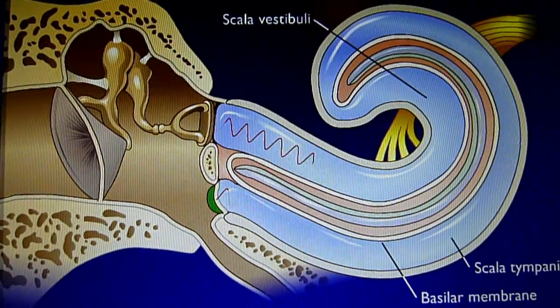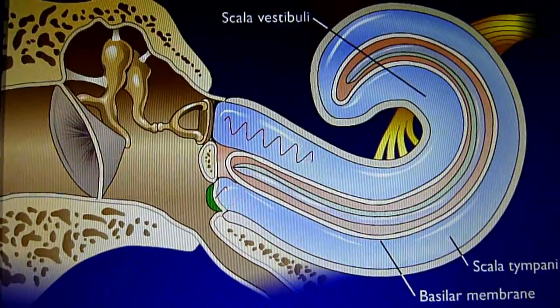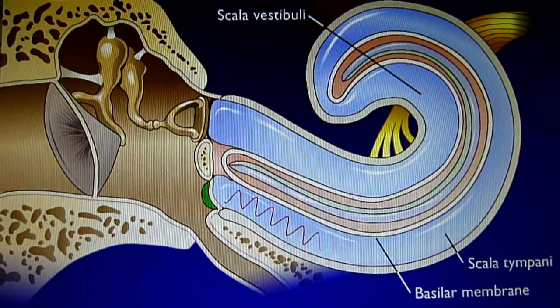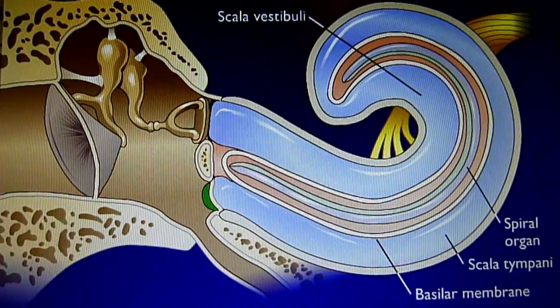Short wavelengths from high-pitched sounds cause displacement of the basilar membrane near the oval window. This movement is detected by hair cells of the spiral organ, which are not visible in the animation.